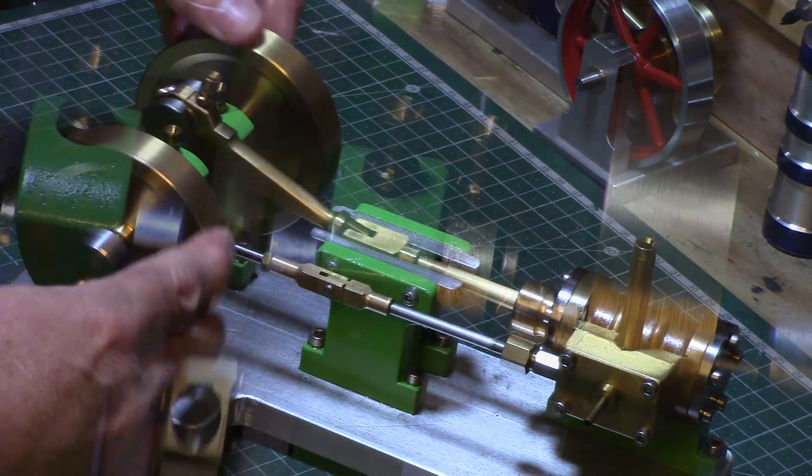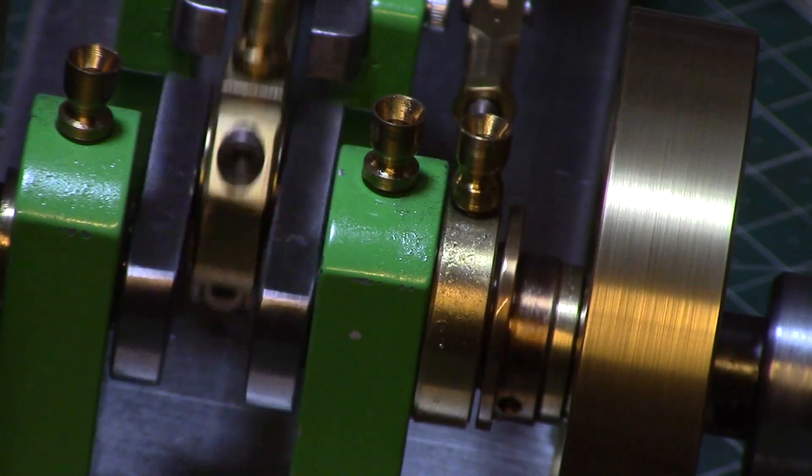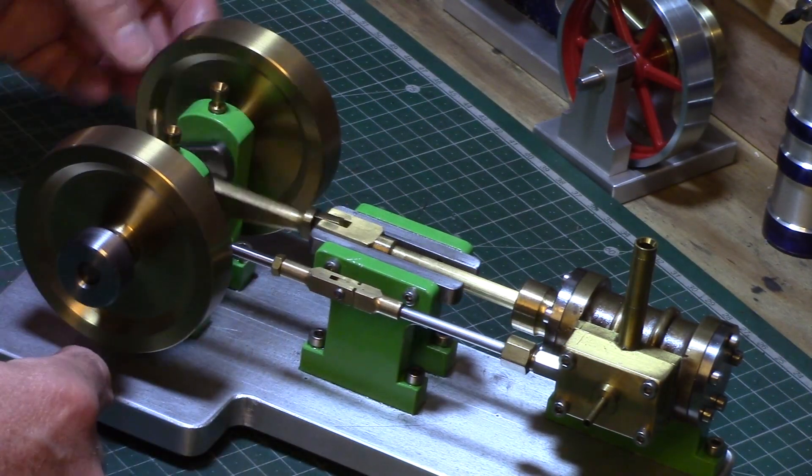The valve is connected to an eccentric hub on the axle with the use of a clevis fork joint to allow for the oscillation movement.